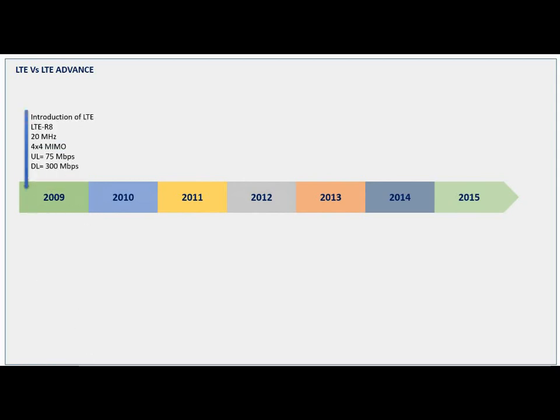Here is the time scale from 2009 to 2015. LTE was first proposed by NTT Docomo of Japan in 2004, but the LTE standard was finalized in December 2008 and the first publicly available LTE service was launched on December 14, 2009. At initial level, LTE launched with 300 Mbps download speed achieved by 4x4 MIMO in a 20 MHz band.